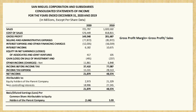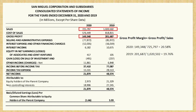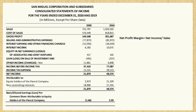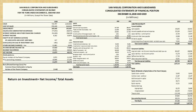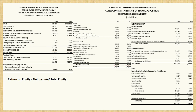Last are the profitability ratios. The gross profit margin gradually increased, but the net profit margin decreased because of low sales and continued expenses of the corporation. The return on investment and return on equity, on the other hand, significantly decreased, which means that investments did not perform well in 2020 and the company was not able to generate high income from the equity available to it.